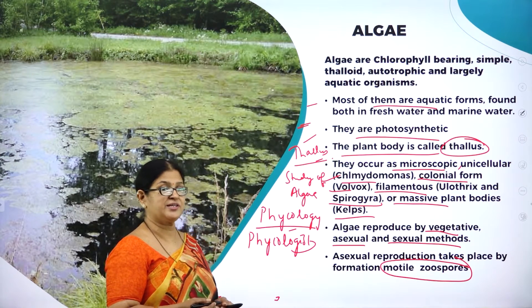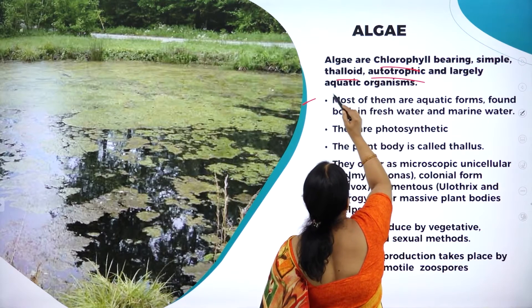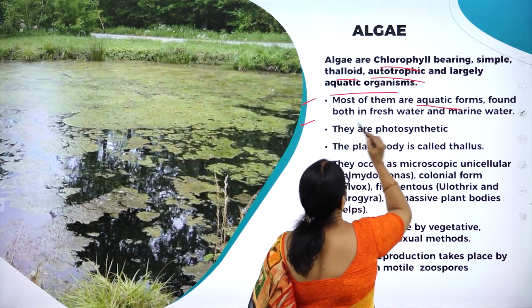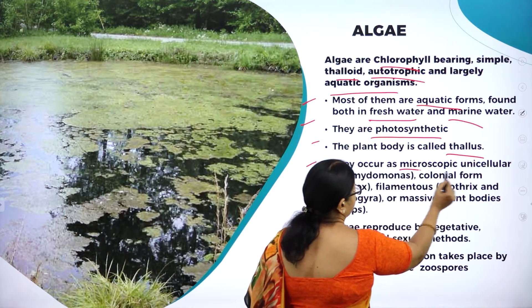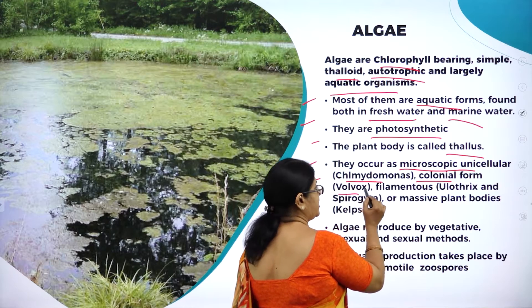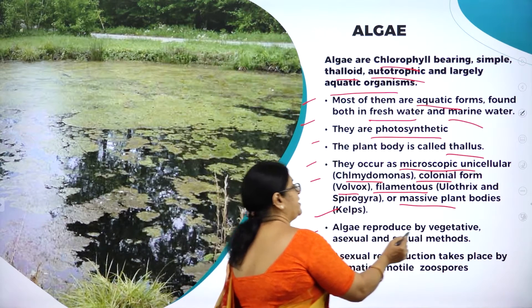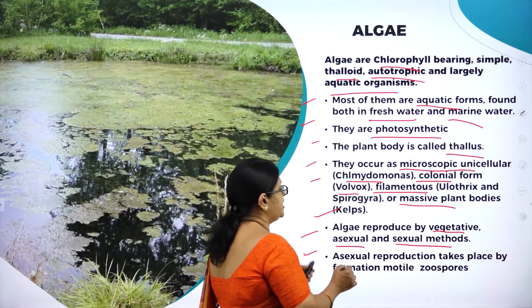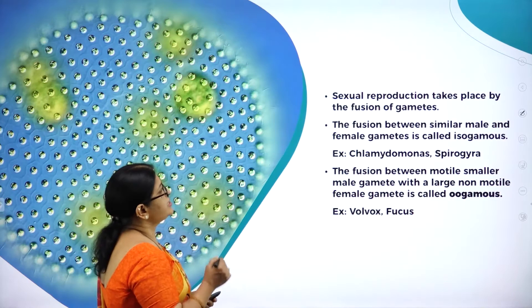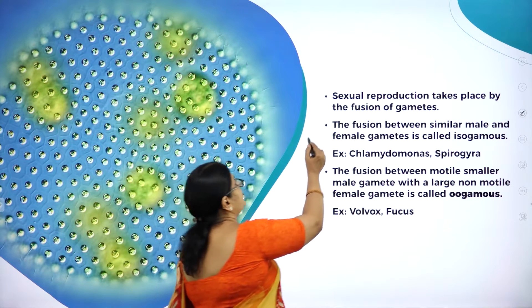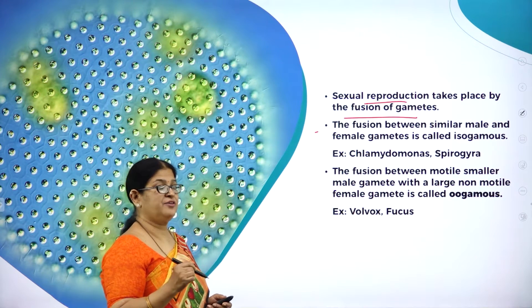The characteristic features of algae: they are chlorophyll-bearing, thalloid, autotrophic, and largely aquatic organisms — found both in freshwater and marine water. They are photosynthetic, and the plant body is thallus. They occur as microscopic unicellular (Chlamydomonas), colonial (Volvox), filamentous (Spirogyra), or massive plant bodies (kelps). They reproduce by vegetative, asexual, and sexual methods. Asexual reproduction is by formation of motile zoospores; sexual reproduction by fusion of gametes.